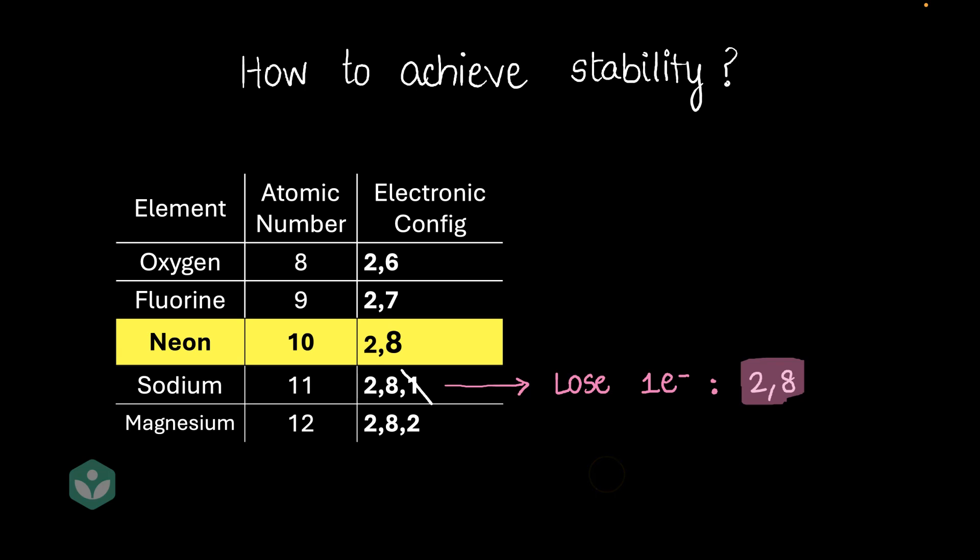Okay, next let's talk about magnesium. What if magnesium was able to somehow lose those last 2 electrons and get the electronic configuration of 2,8? Would it be stable? Yes, of course, it would be stable. Why? Because now it's achieved the electronic configuration of neon, which is 2,8, right?